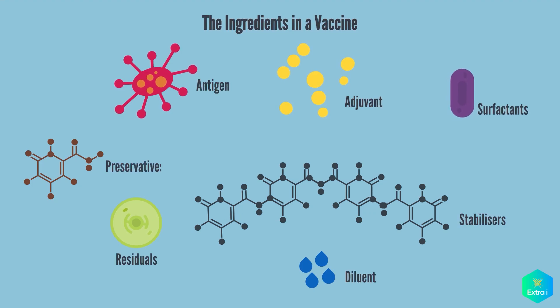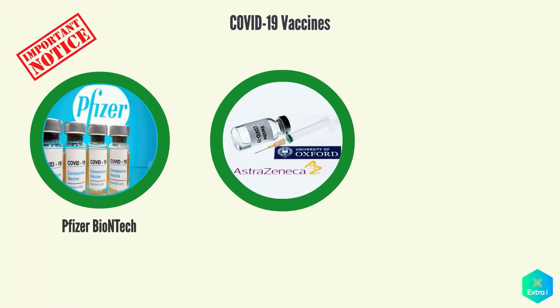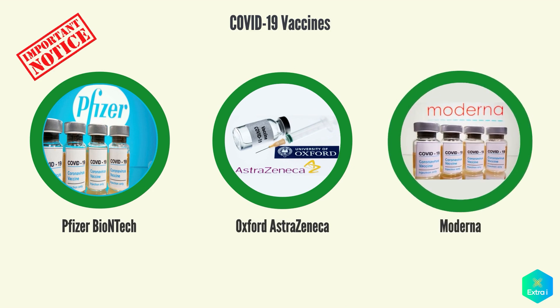We hope you found the information in this video useful. It is important to note that the Pfizer-BioNTech vaccine, the Oxford-AstraZeneca vaccine, and the Moderna vaccine against COVID-19 do not contain any gelatine or other animal products. All three vaccines are suitable for vegetarians.